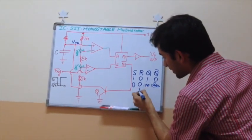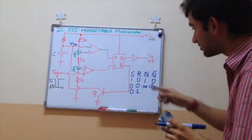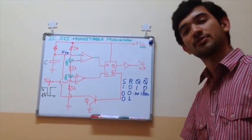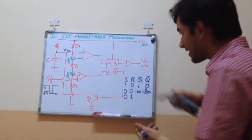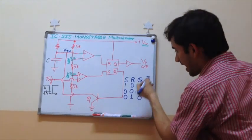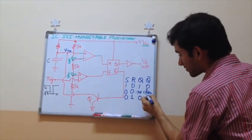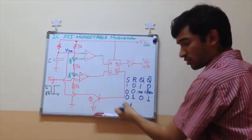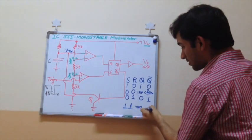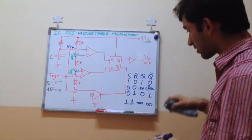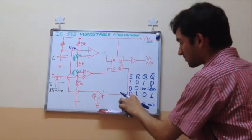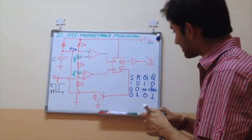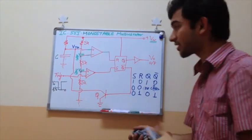If R becomes 1 and S stays 0, then the output resets to 0. If it was 0, it stays 0; if it was 1, it turns to 0 and Q bar becomes 1. The fourth case is the indeterminate case in which both S and R are 1 — I cannot determine Q and Q bar because both become 1, but this case won't come in this problem. This is what we will be consulting throughout the working of the circuit.